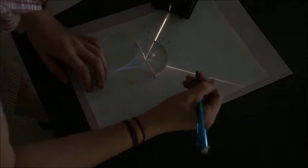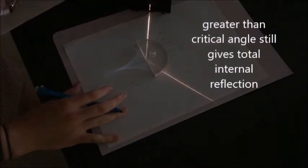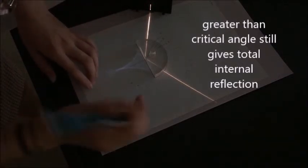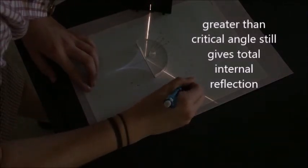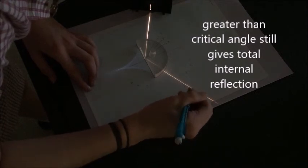Now she'll increase that even more. This is past the critical angle. There's still total internal reflection and she'll find the angle of incidence equals the angle of reflection as well.